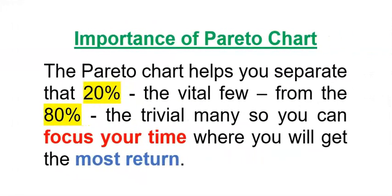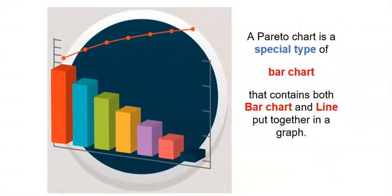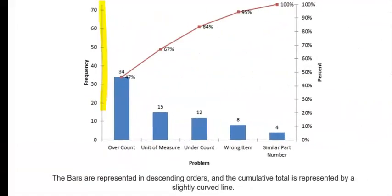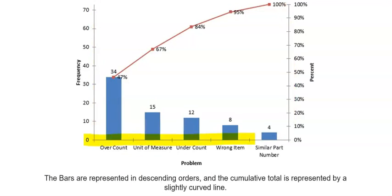Pareto chart enables organization to focus time when most return can be achieved. How does Pareto chart look like? A Pareto chart is a special type of bar chart that contains both bar chart and line together in a graph. A Pareto chart contains two y-axes and just one x-axis. The x-axis will be the problem that we want to solve. The left of the y-axis will contain the cumulative frequency, while the right of the y-axis will contain the cumulative percentage. The bars are represented in descending order, and the cumulative total is represented by a slightly curved line.